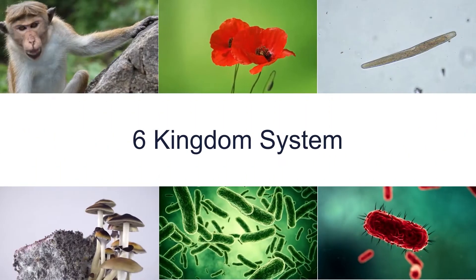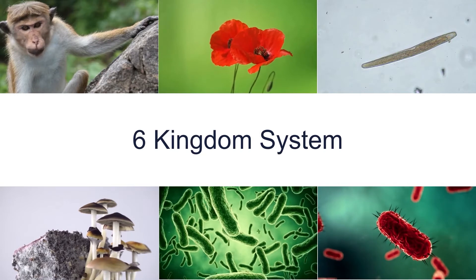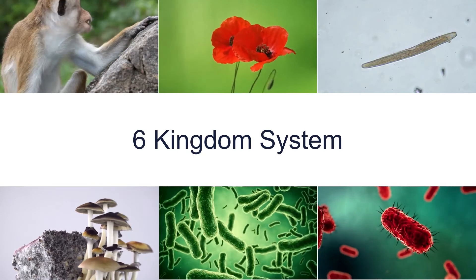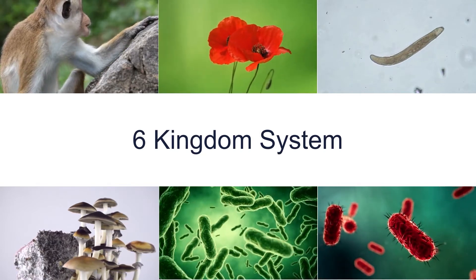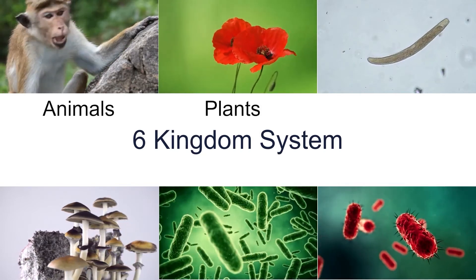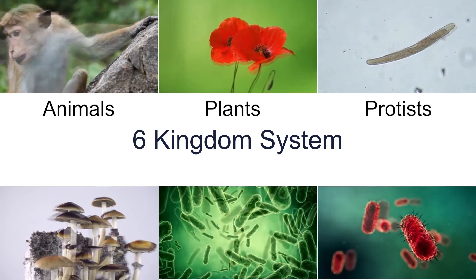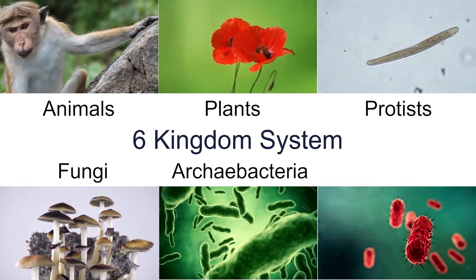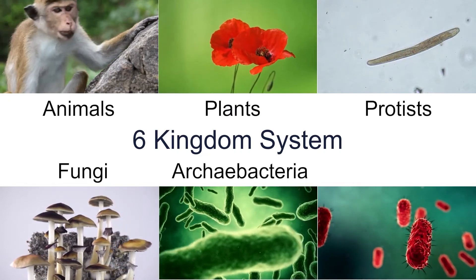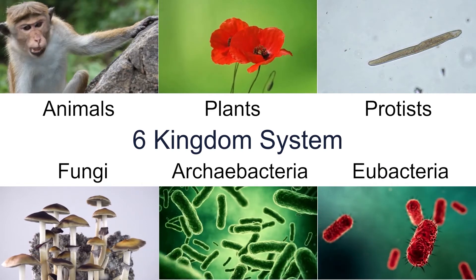Today, modern biologists use the Six Kingdoms system of classification: animals, plants, protists, fungi, archaeabacteria, and eubacteria.